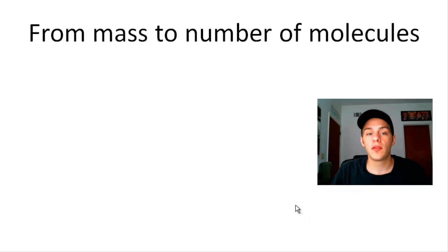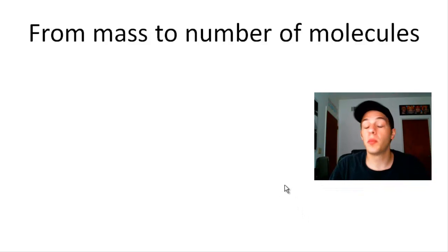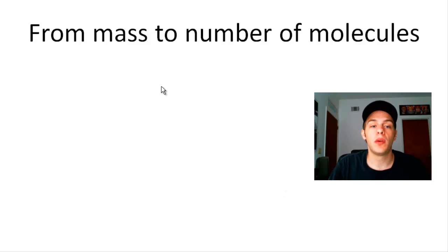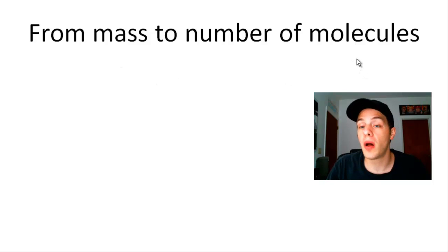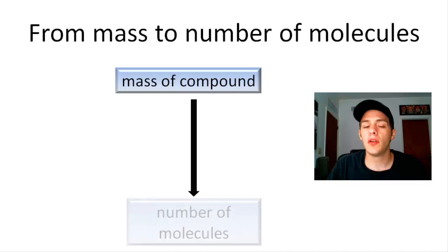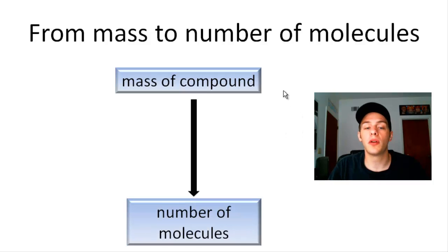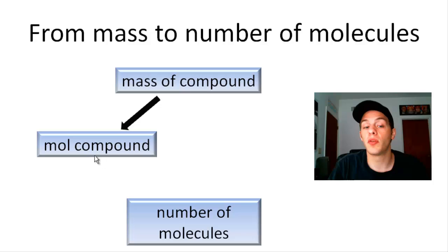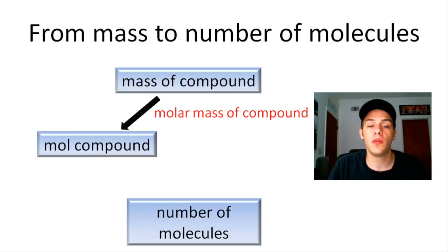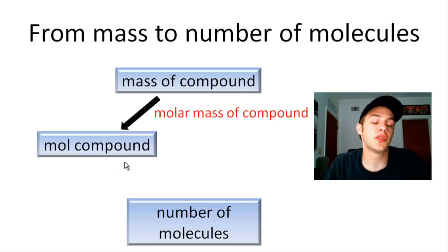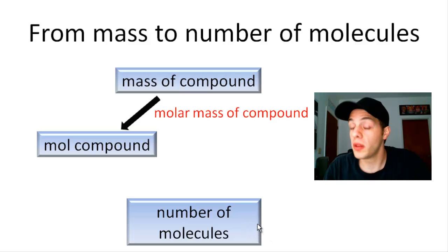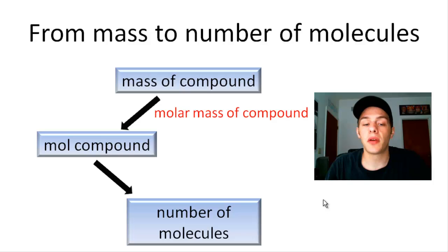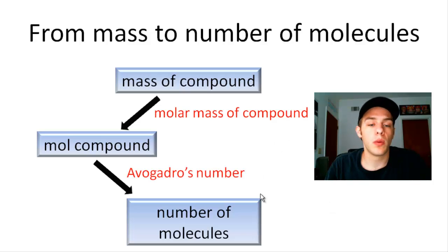With molar mass and formula mass, we can count molecules by weighing a sample of a compound — starting with mass and getting all the way to number of molecules. We do this in a two-step process: first, convert mass of the compound to moles using the molar mass; then convert moles to number of molecules or formula units (for ionic compounds) using Avogadro's number. Let's go through an example.